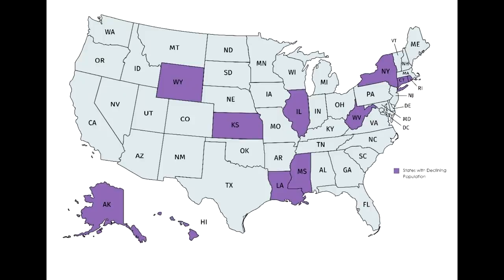There are currently 11 states in the U.S. that are losing population. Try to find a correlation between these 11 states and political leanings, cost of living, or tax rates — and there's no correlation at all. Six of these states are considered Republican states, five are considered Democrat states. Some of them are cheap, some are expensive, some are high-tax, some are low-tax.